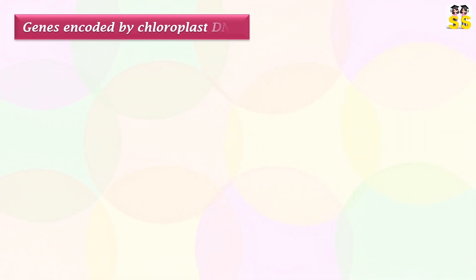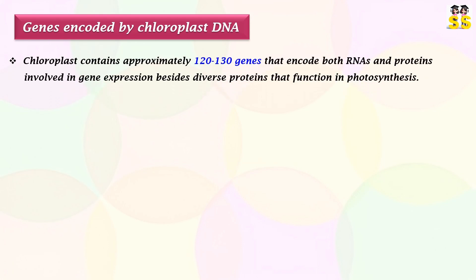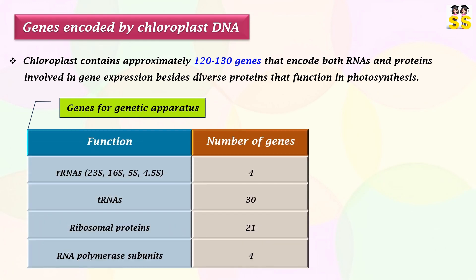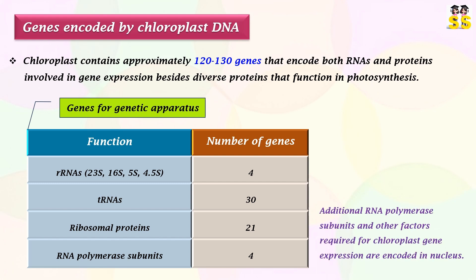Genes encoded by chloroplast DNA. Approximately 120 to 130 genes are present in the chloroplast that encode both RNAs and proteins involved in gene expression, besides diverse proteins that function in photosynthesis. Genes for the genetic apparatus are listed in this table. Both the ribosomal and transfer RNAs used for translation of chloroplast mRNAs are encoded by the chloroplast genome. It also encodes about 21 ribosomal proteins and four subunits of RNA polymerase. Additional RNA polymerase subunits and other factors required for chloroplast gene expression are encoded in the nucleus.